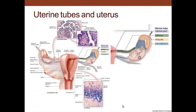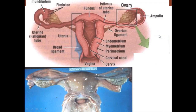The uterine tube, or oviduct, stretches from the ovary all the way to the uterus. It has a fimbria which covers over the ovary and collects the egg, then the ampulla, and then the isthmus as it approaches the uterus. The different regions are the infundibulum with the fimbriae fingers projecting over the surface, the ampulla, and the isthmus leading to the uterus.